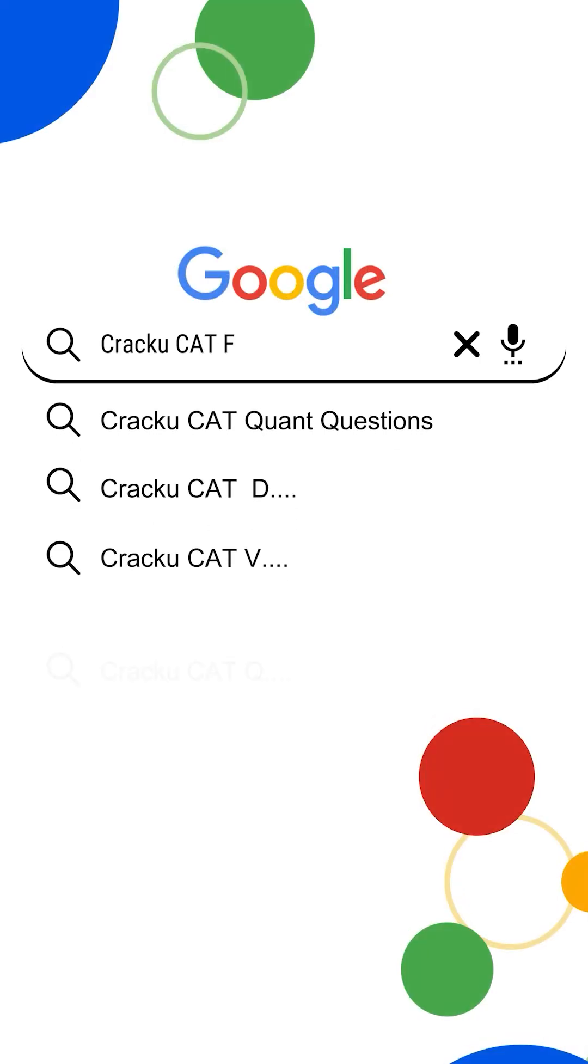To download all important formulas for CAT and for quick revision, just go to Google and search Cracku CAT formulas PDF.